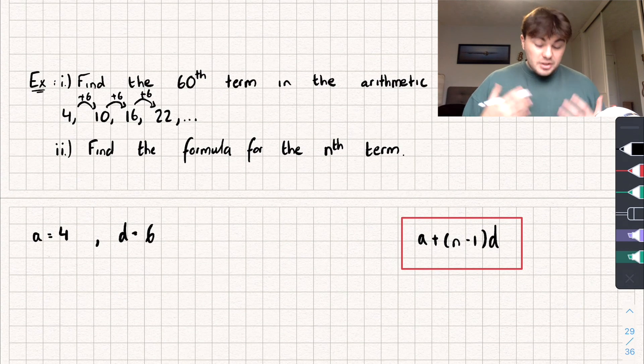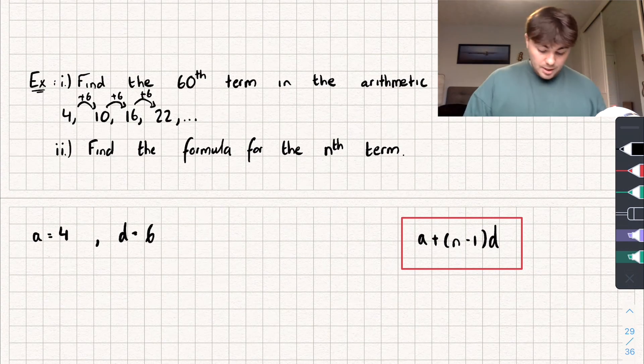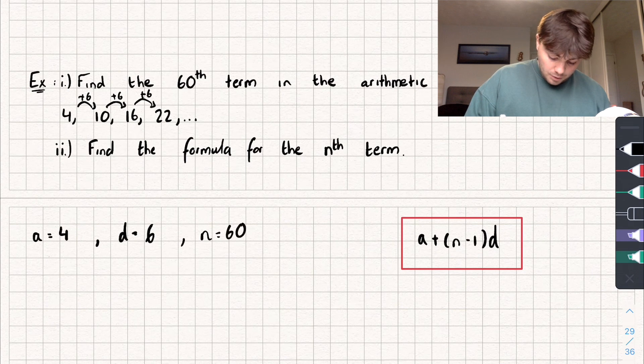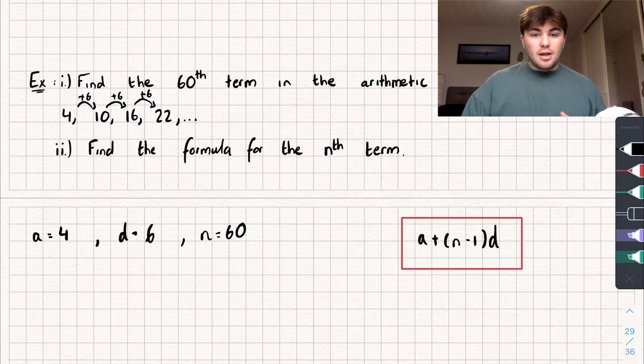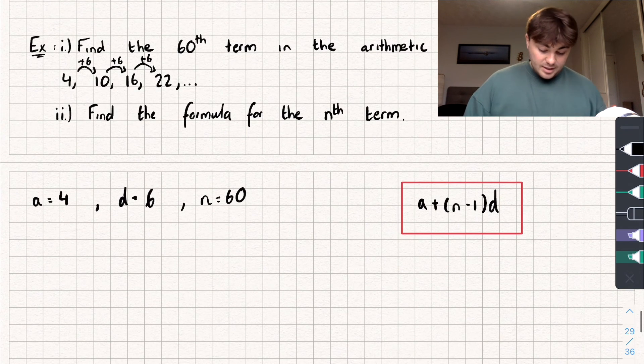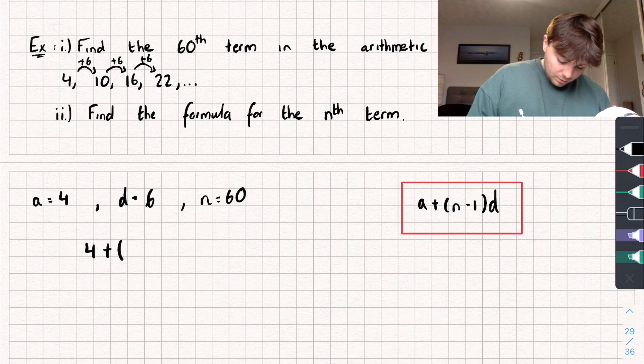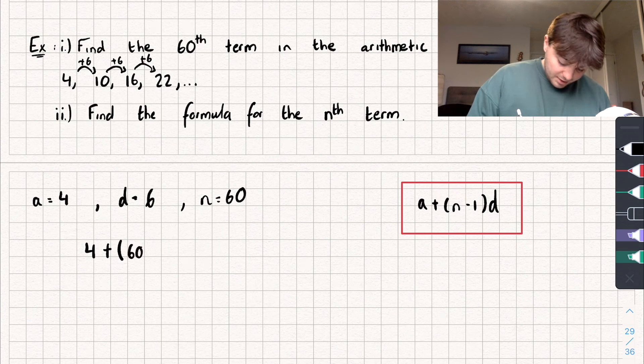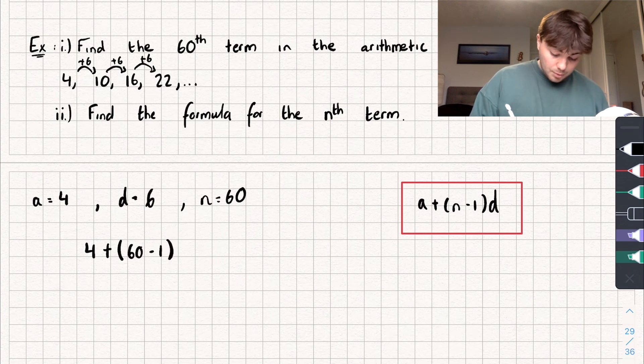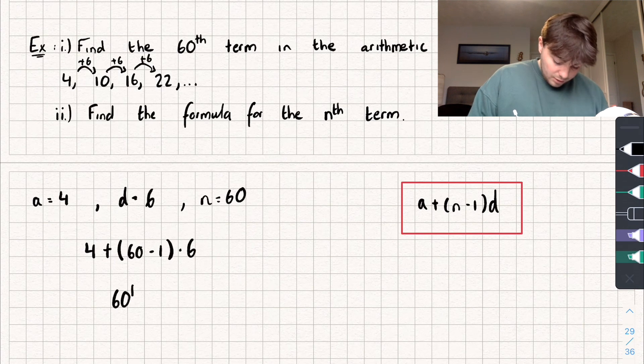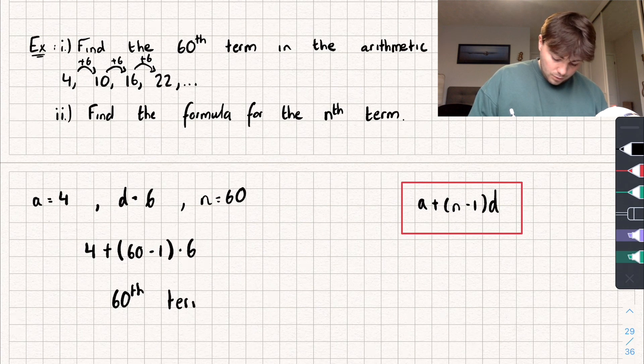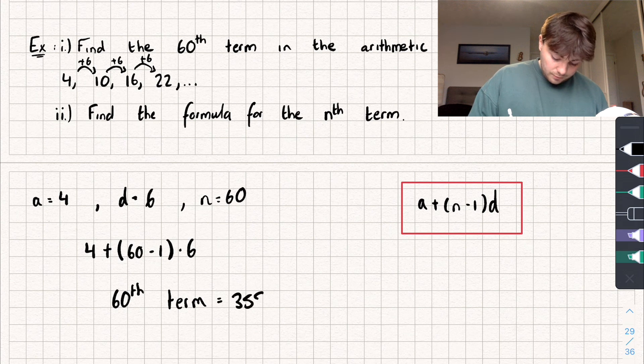So from here we want to know the 60th term. So that's when n is going to be equal to 60. So now all I have to do is substitute all of that into what's in the red box there for my nth term, and I'll be given the 60th term in the sequence. So we've got 4 plus our n minus 1, so that's just going to be 60 minus 1 multiplied by d, which is 6. And I'm just going to do it on a calculator because it's going to be a lot easier. So 4 plus 59 times 6, and we get an answer of, let's write the 60th term, and that's going to be equal to 358.